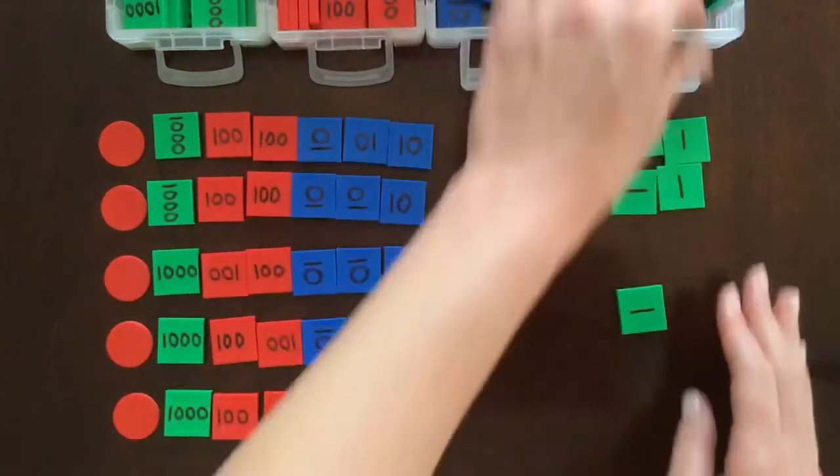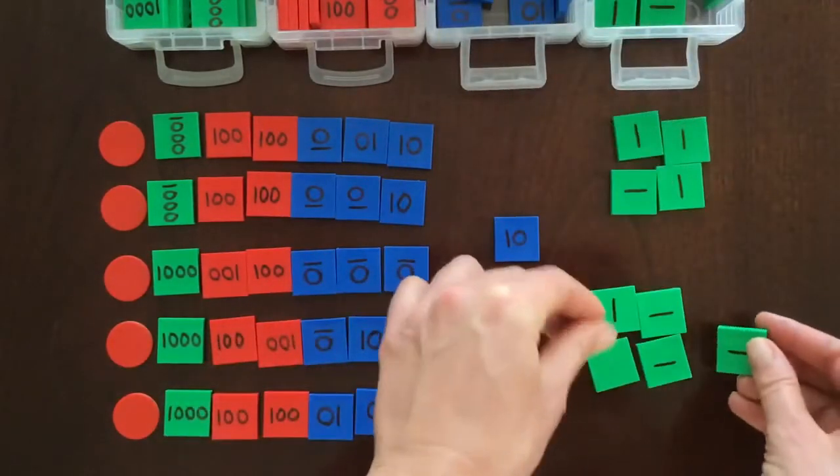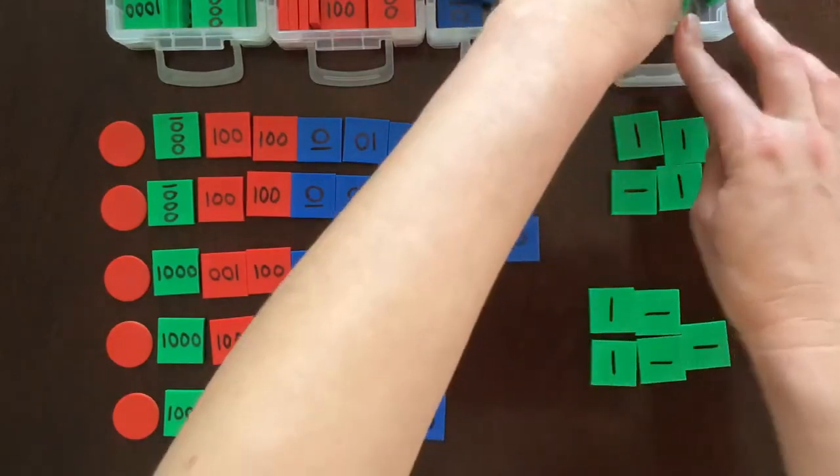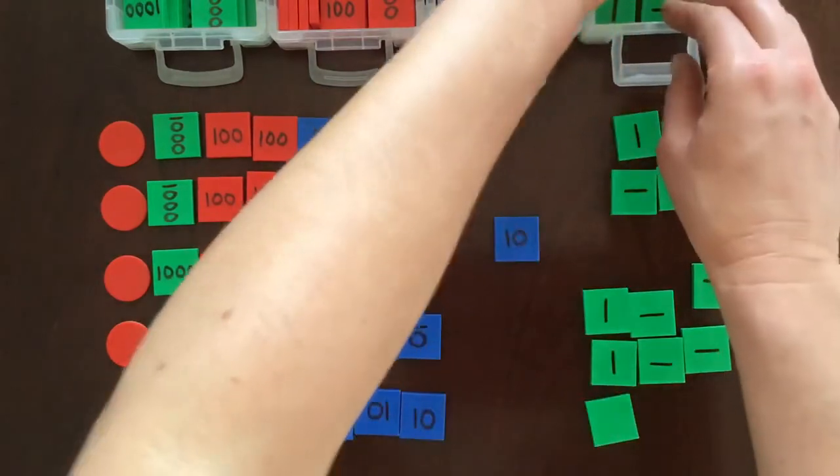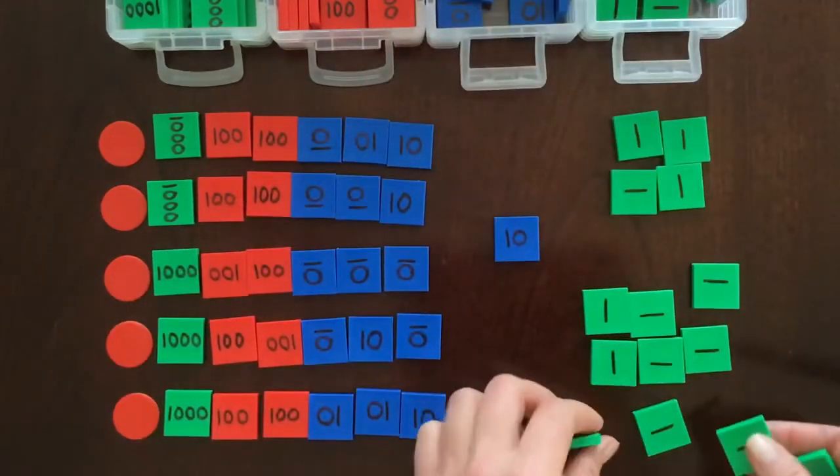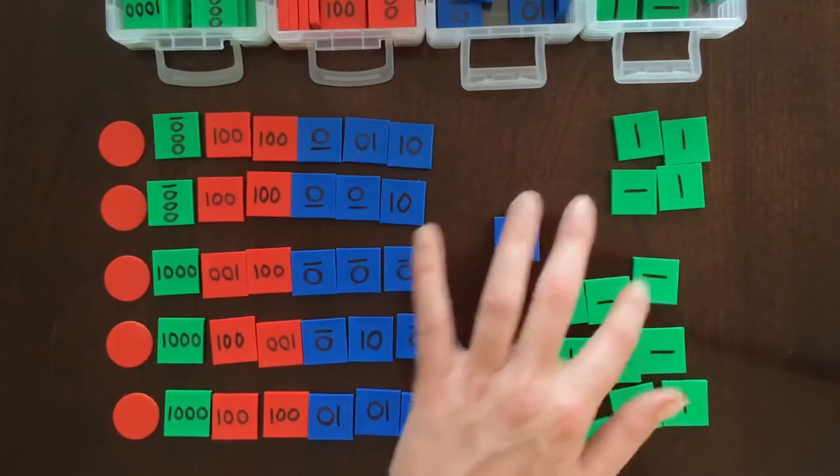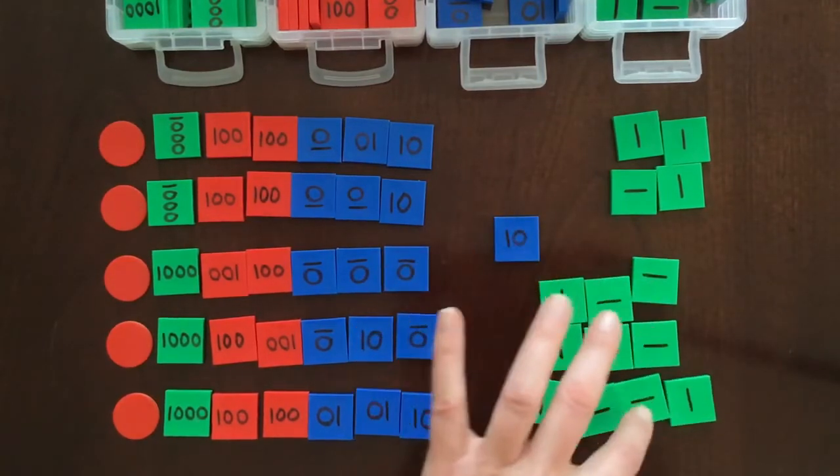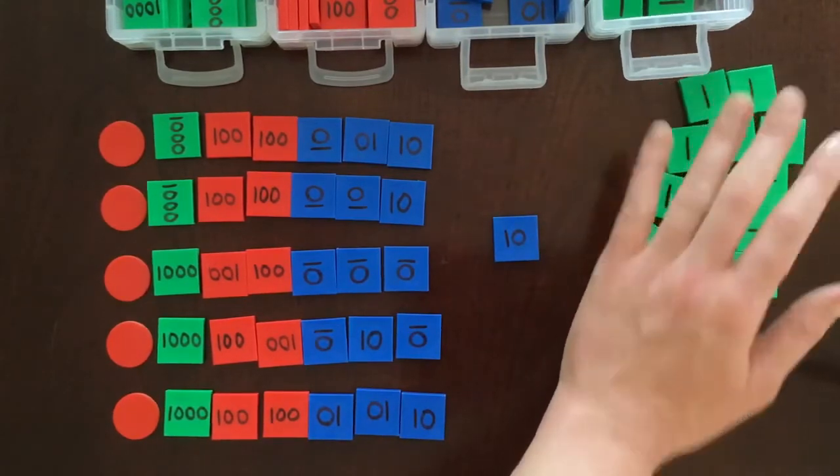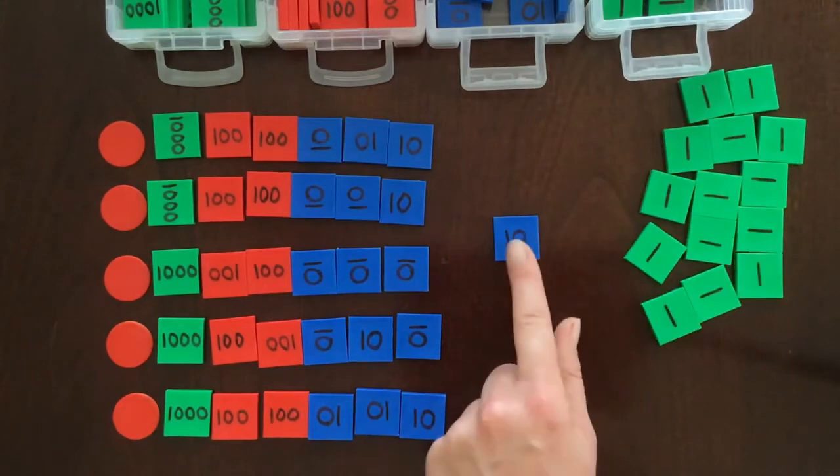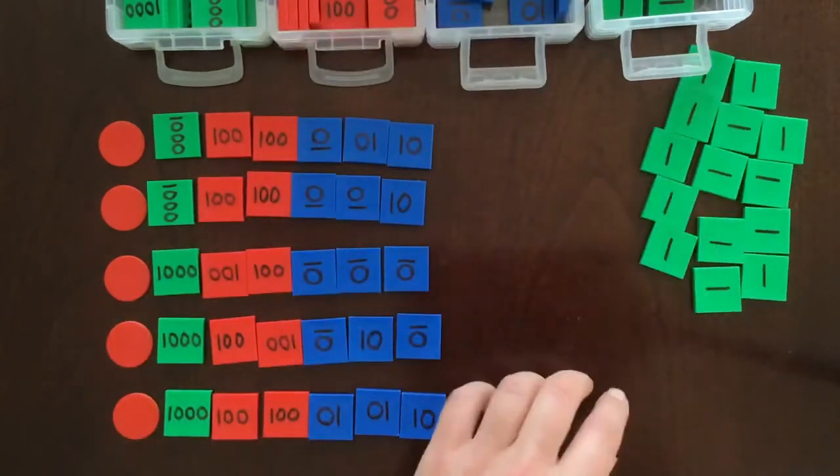1, 2, 3, 4, 5, 6, 7, 8, 9, 10. Let me make sure I have 10. Good. We'll put those together. And I'm actually going to move it off to the side a little bit. And then we're going to exchange this one 10 again for 10 ones. And again, we'll keep it separate.